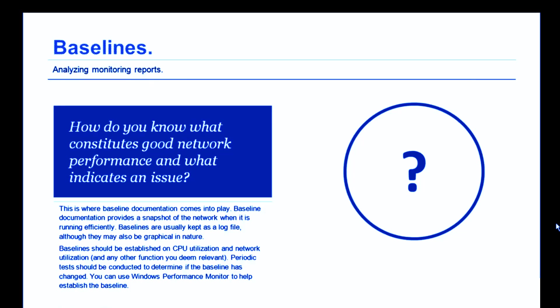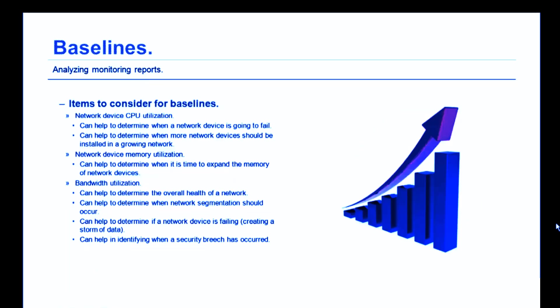You can use Windows Performance Monitor to help establish the baselines for your network. Let's talk about some of the items that should be considered for baseline reports. First up is network device CPU utilization. Knowing the CPU utilization on a piece of equipment can help to determine when a network device is going to fail.